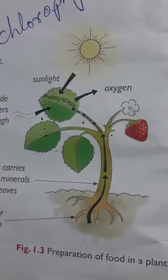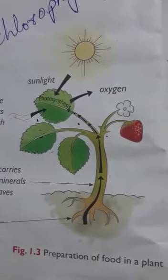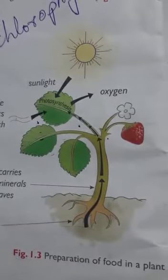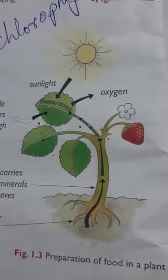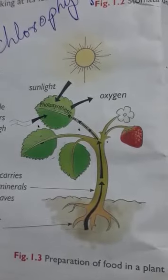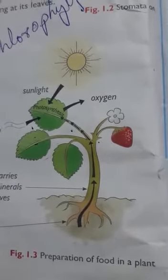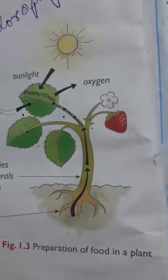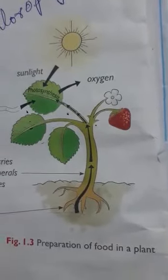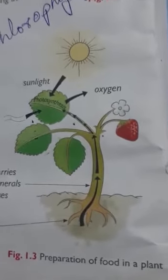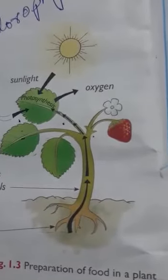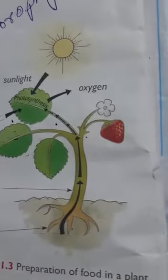The leaves use this energy to convert carbon dioxide, water, and minerals into food. As a result, oxygen and water vapor are released. Chlorophyll and sunlight are essential for a plant to prepare its food.